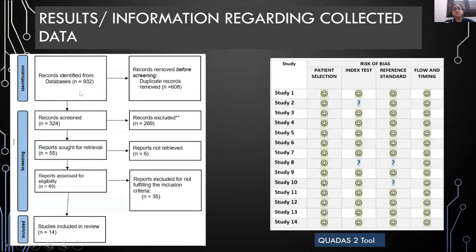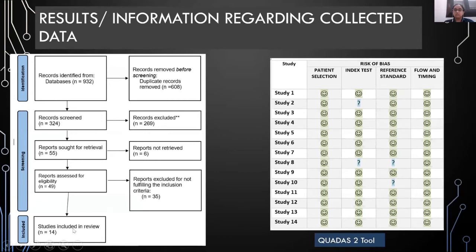The initial search obtained 932 records. Following removal of 608 duplicates, we screened 324 articles for title and abstract, after which 269 records were excluded. 55 reports were then sought for full-length retrieval, out of which 6 could not be retrieved. 49 were assessed for eligibility according to the inclusion and exclusion criteria, and 14 were ultimately included in the review.